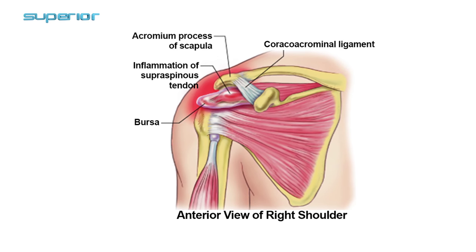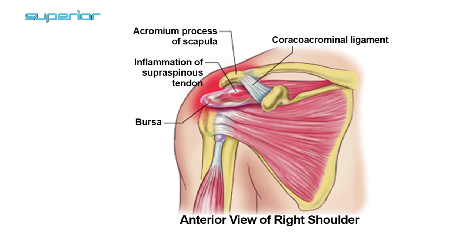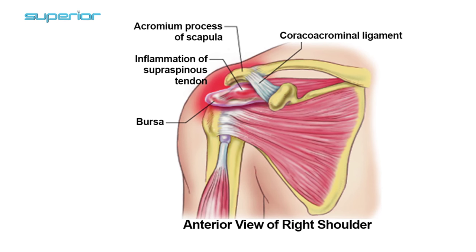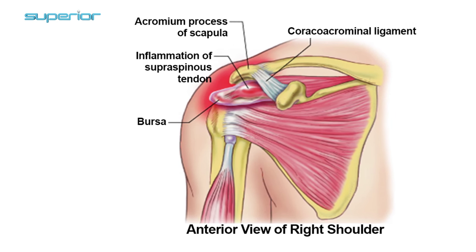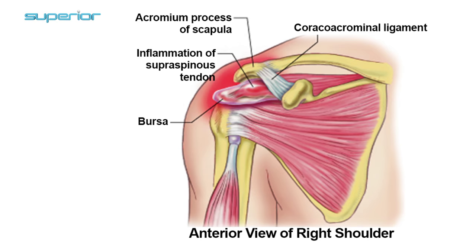Before I show you the 30-second self-test for shoulder pain, I just wanted to talk about the three most common conditions that we see as physical therapists regarding the shoulder. This first image here shows that in the shoulder you have a bursa and you have the rotator cuff tendons that come under this area called the coracoacromial ligament and the acromion process. That area shows inflammation of the rotator cuff tendon, so we would call that shoulder tendonitis.